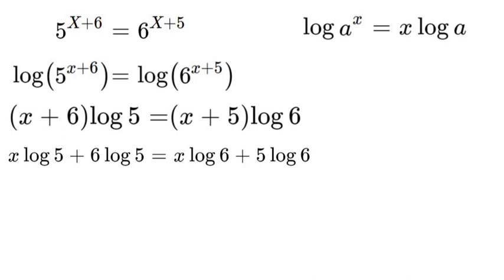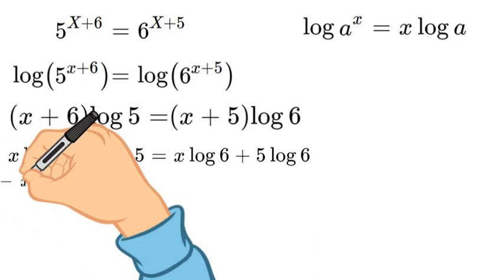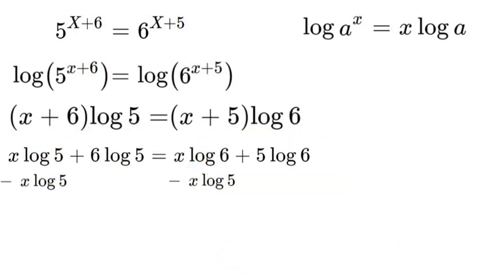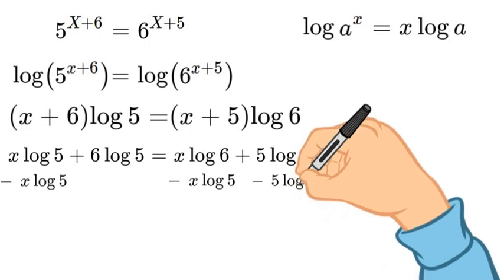Now, we're going to simplify this. We can simplify it by subtracting x log 5 from both sides. And then we will subtract 5 log 6 from both sides.